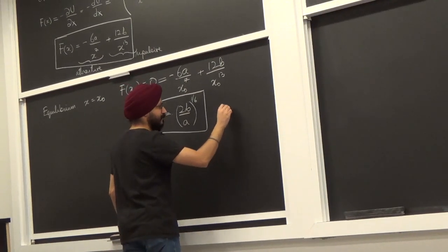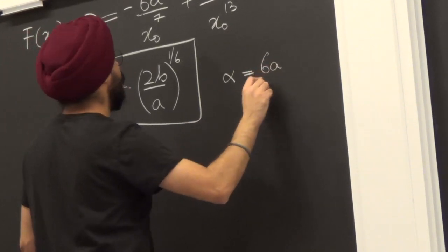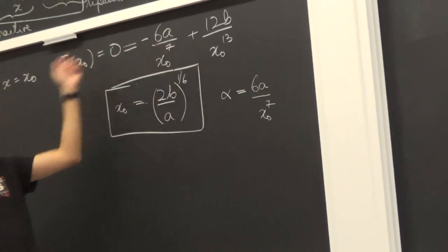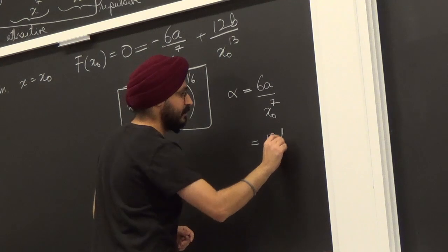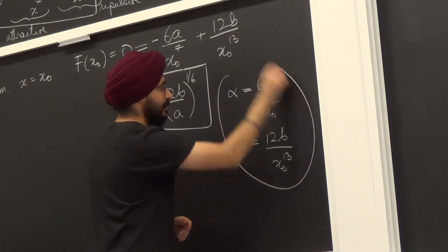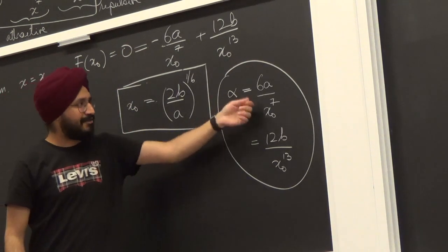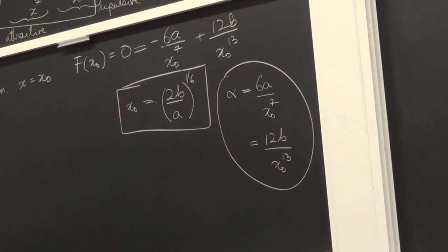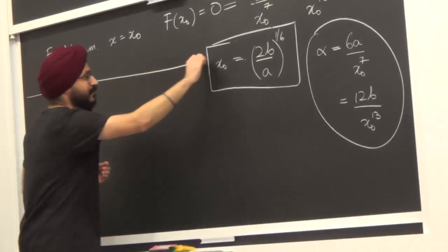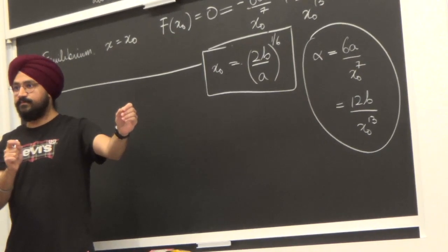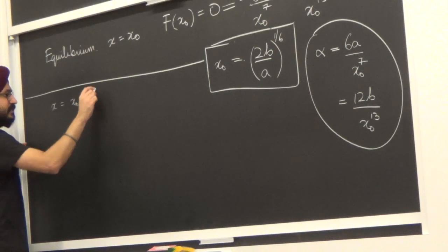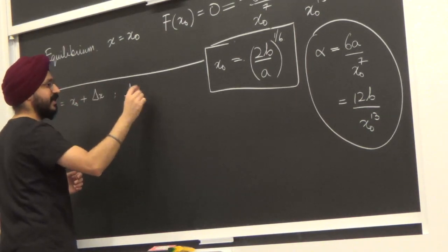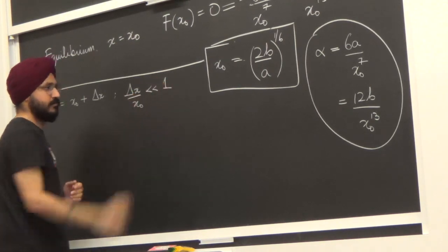For convenience, let me define α = 6a/x₀⁷. Since at equilibrium this also equals 12b/x₀¹³, α captures the equilibrium condition. Now, what happens if I perturb the system slightly away from equilibrium? Let x = x₀ + δx, where δx/x₀ ≪ 1 — small perturbations only.